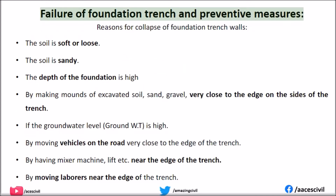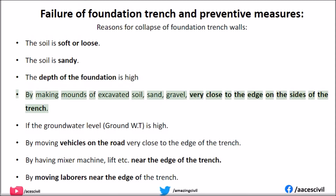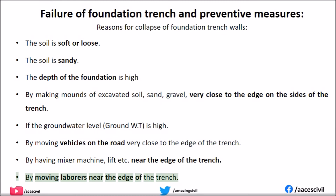Failure of foundation trench and preventive measures. Reasons for collapse of foundation trench walls include: soft or loose soil, sandy soil, high foundation depth, making mounds of excavated soil, sand, or gravel very close to the edge of the trench, high groundwater level, moving vehicles on roads very close to the trench edge, having mixer machines or lifts near the trench edge, and laborers moving near the trench edge.